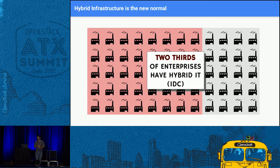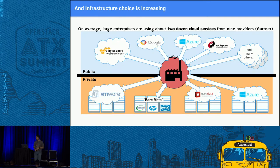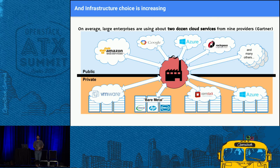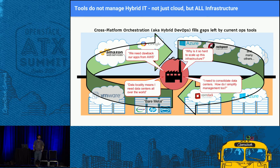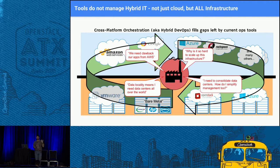The reality — and this is an IDC number I think is wildly low — is that two-thirds of enterprises are hybrid. A Gartner number says most enterprises are using two dozen cloud services from nine different providers. This is what people's IT environments look like, and they didn't even factor in their own internal infrastructure as hybrid. People want to be able to move back and forth; they don't want to be locked into VMware or OpenStack. The extent to which OpenStack will succeed is the extent to which we create portability between cloud providers.